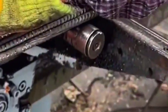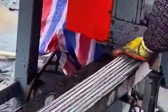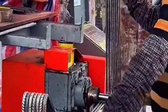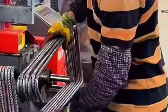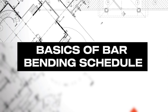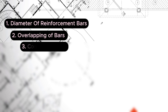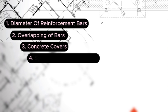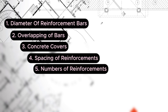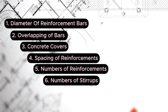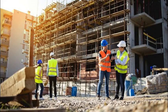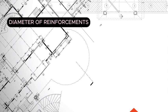There are technicalities around the bending of reinforcement for construction projects and you should be informed about it all. In this video, I'll be showing you the basics of bar bending schedule: looking into the diameter of reinforcement bars, the overlapping of bars, the concrete covers, the spacings of reinforcement, the determination of the number of bars, and the determination of the number of stirrups. You can then apply this appropriately for your construction projects.